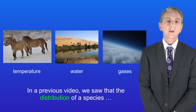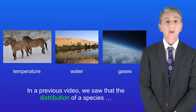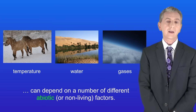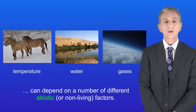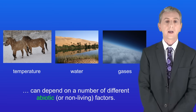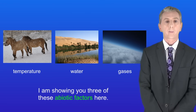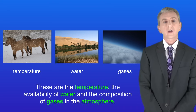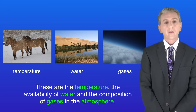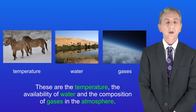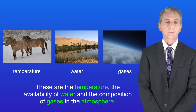In a previous video we saw that the distribution of a species can depend on a number of different abiotic, or non-living, factors. Here are three of these abiotic factors: temperature, the availability of water, and the composition of gases in the atmosphere.